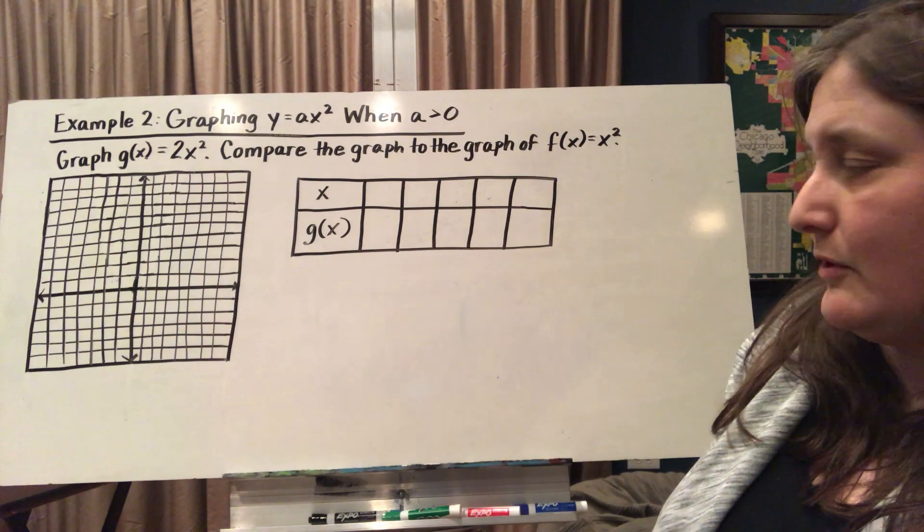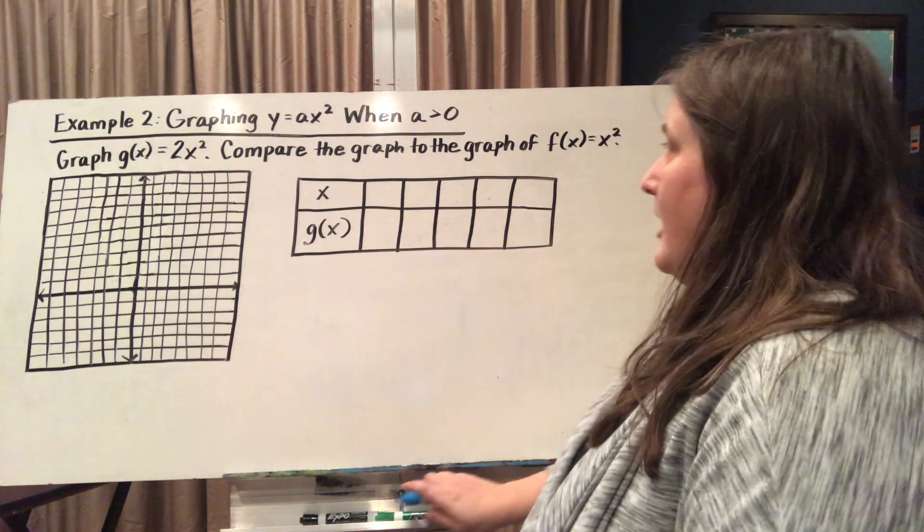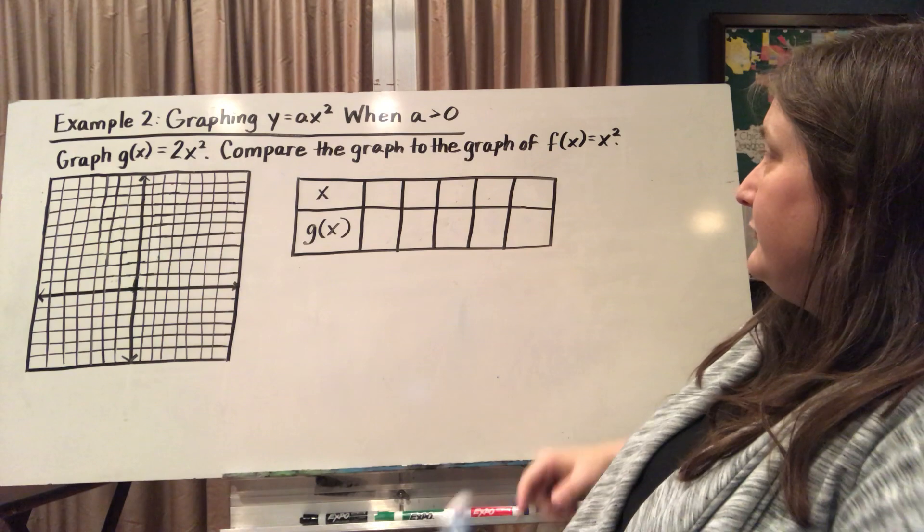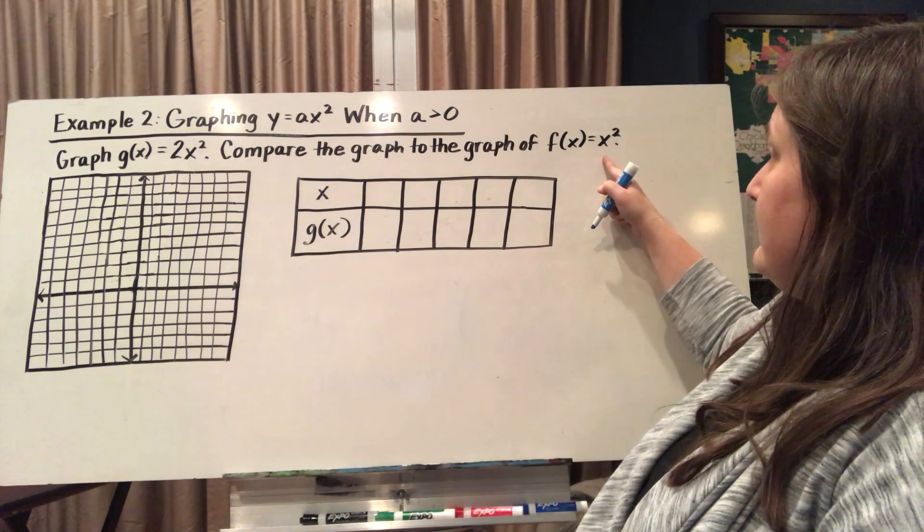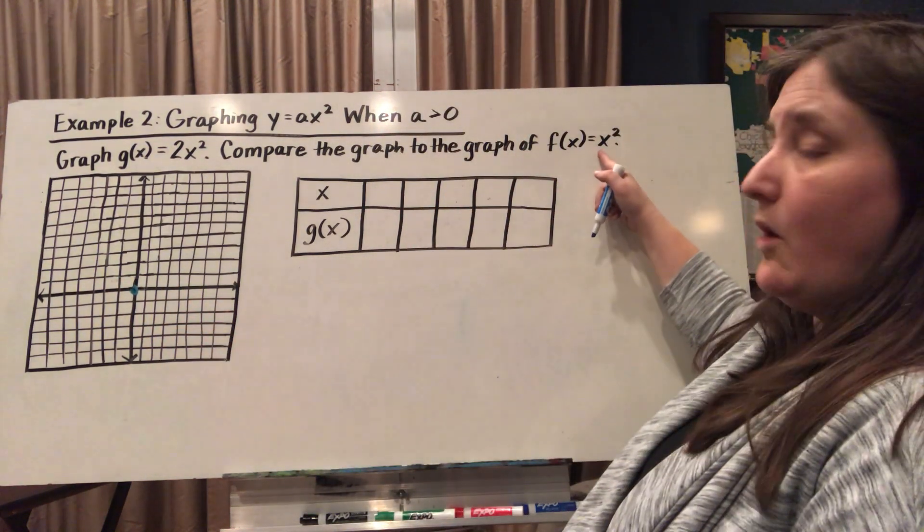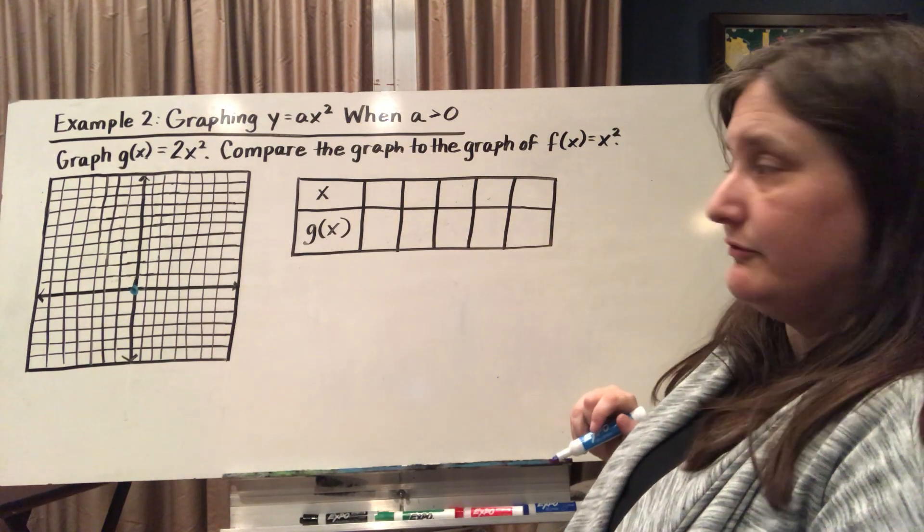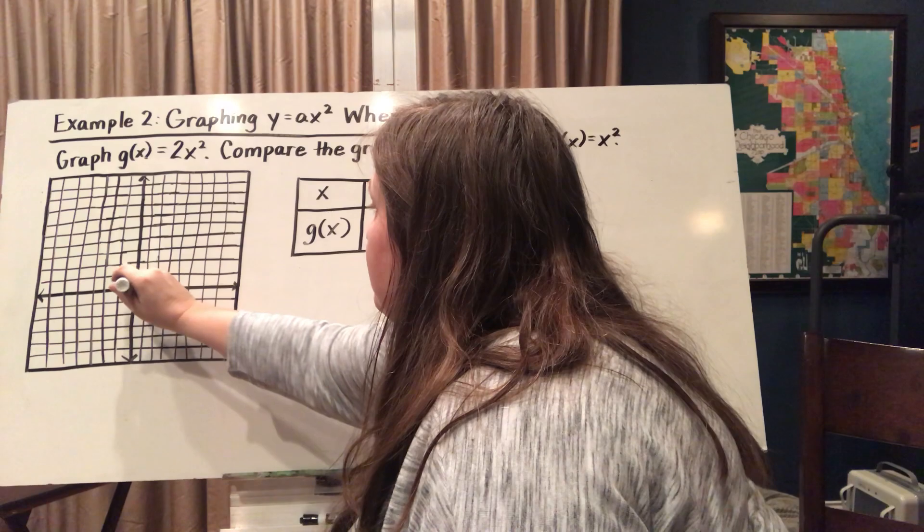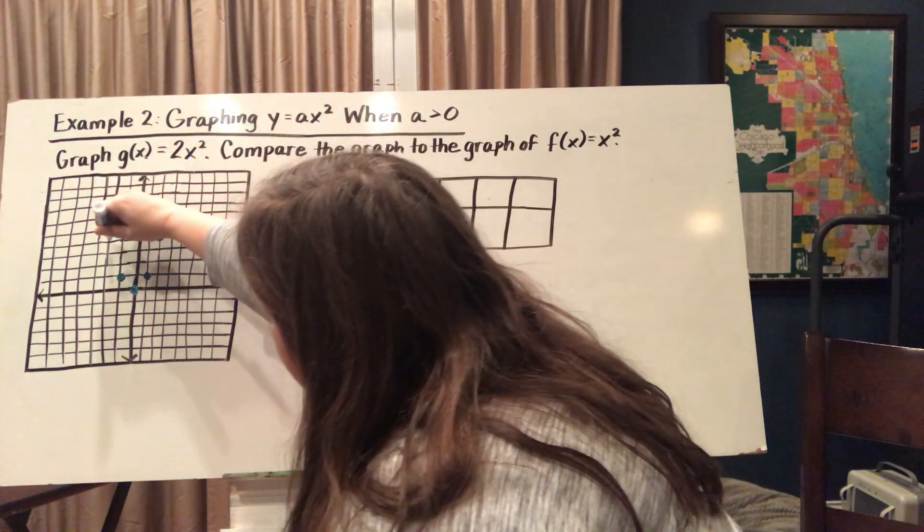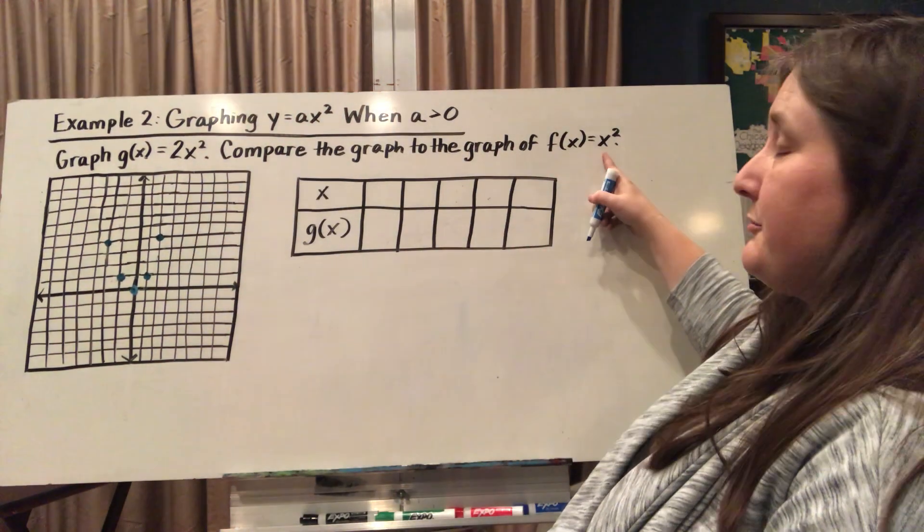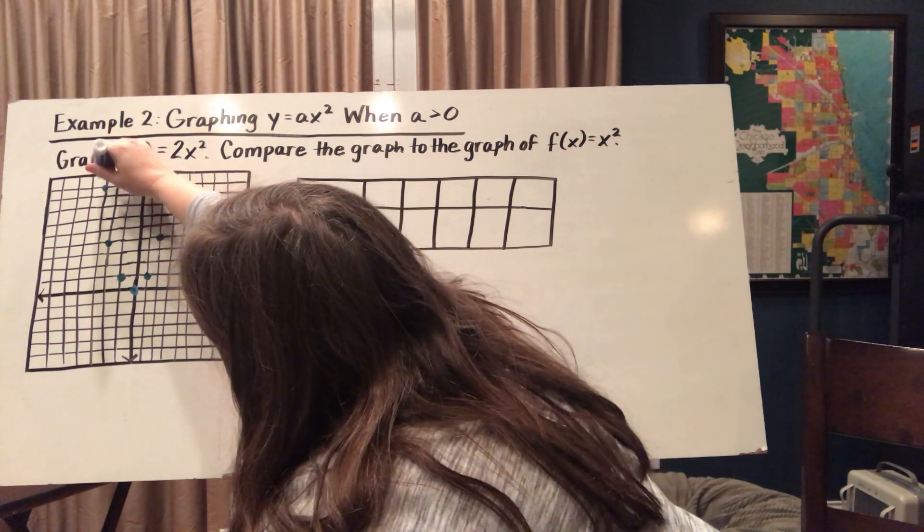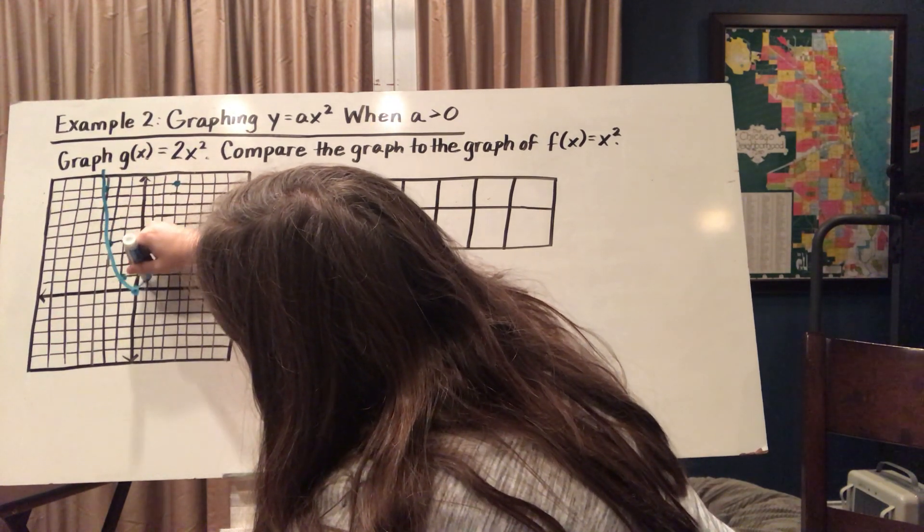So let's graph some quadratic functions. Our parent function here is f(x) equals x squared, so we're going to graph this one first. If I plug in 0 for my x, 0 squared is going to give us 0. If I plug in 1 or negative 1, I'm going to get an output of 1. If I plug in 2 or negative 2, I'm going to get an output of 4. If I plug in 3 or negative 3, I'll get an output of 9. And I can draw in here my parent function.